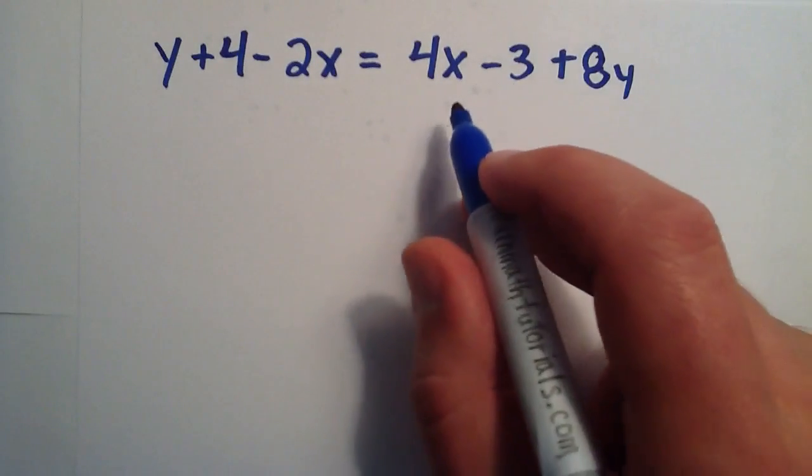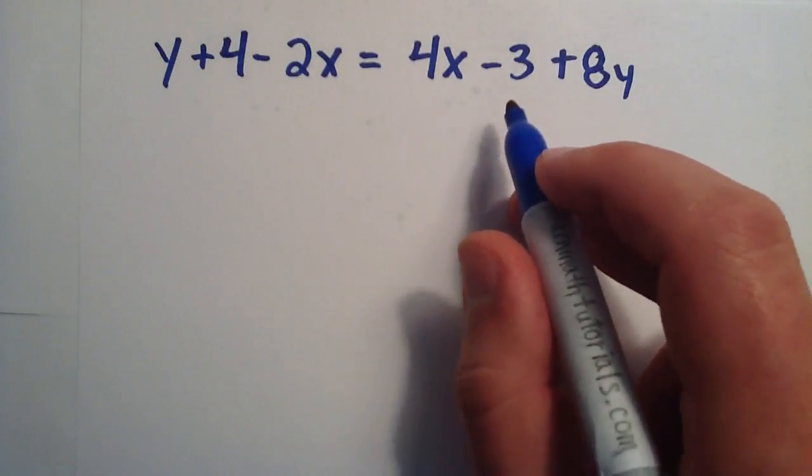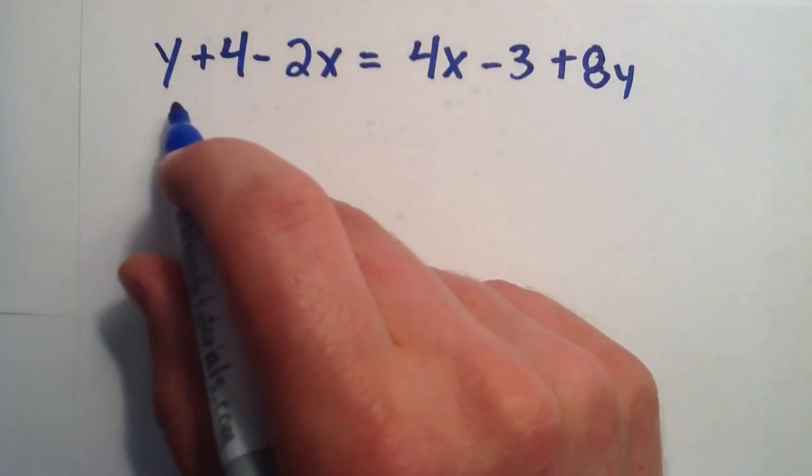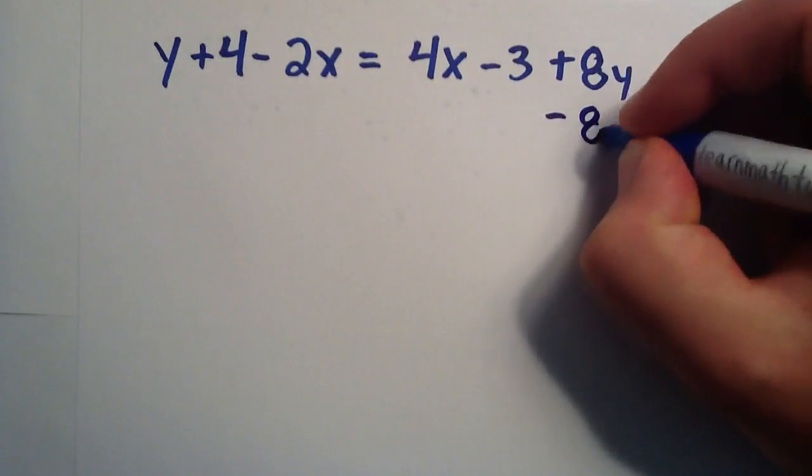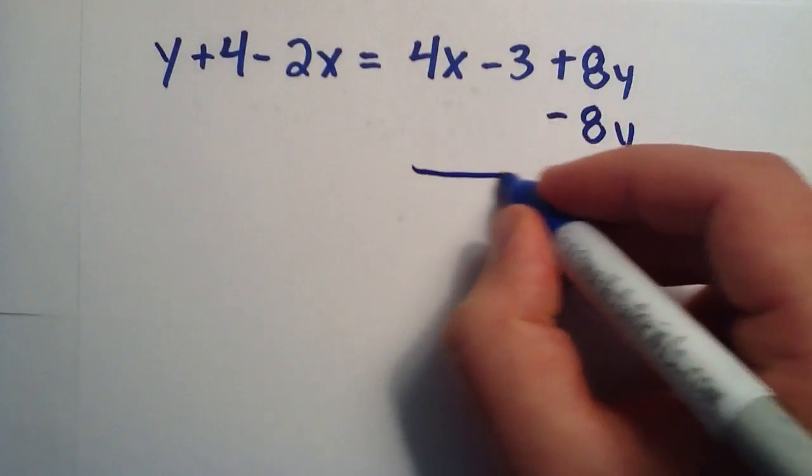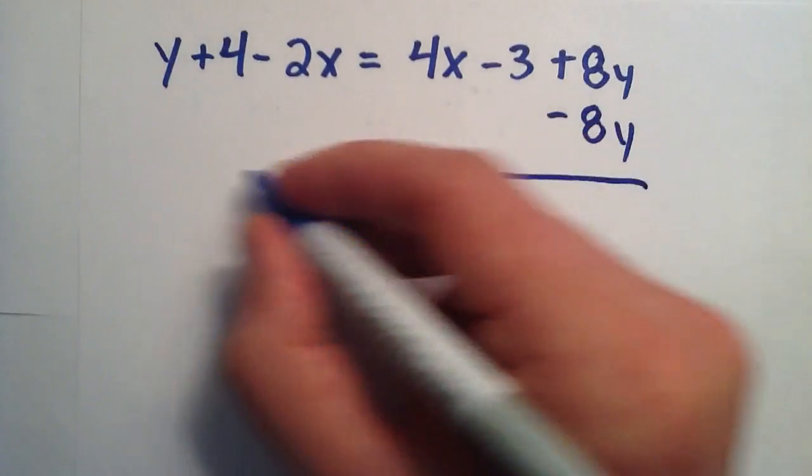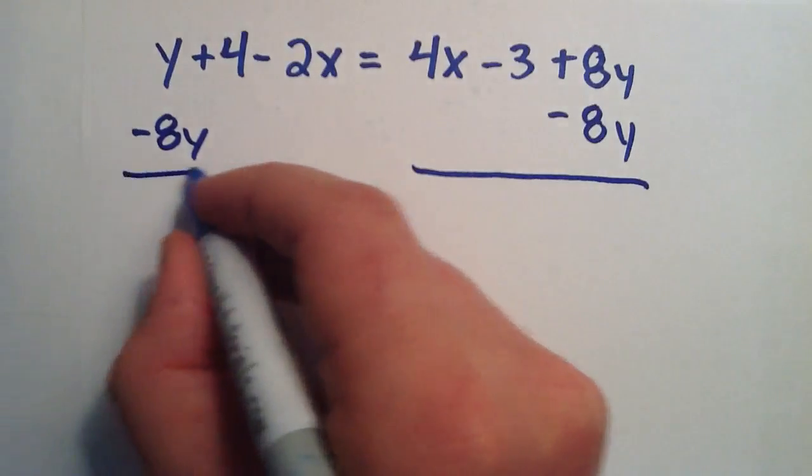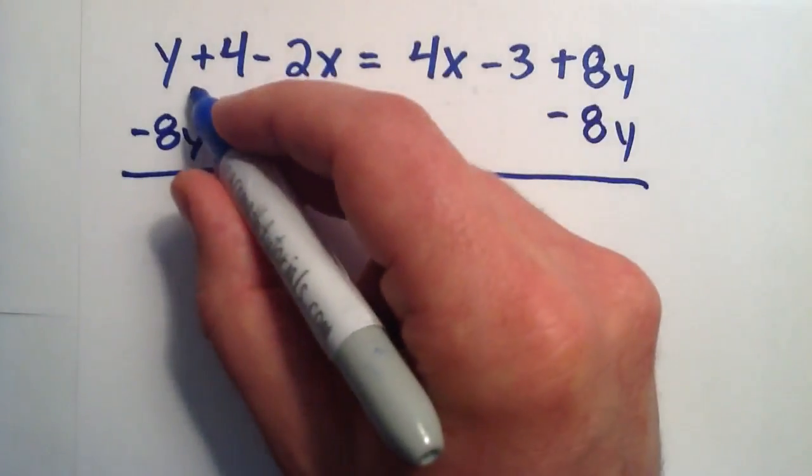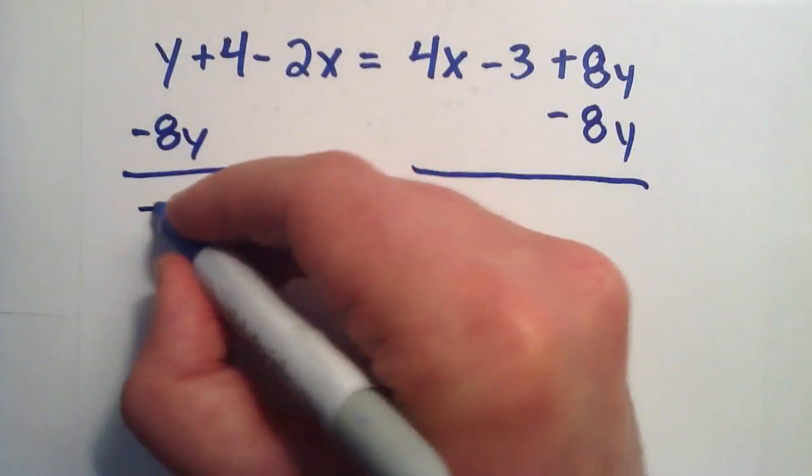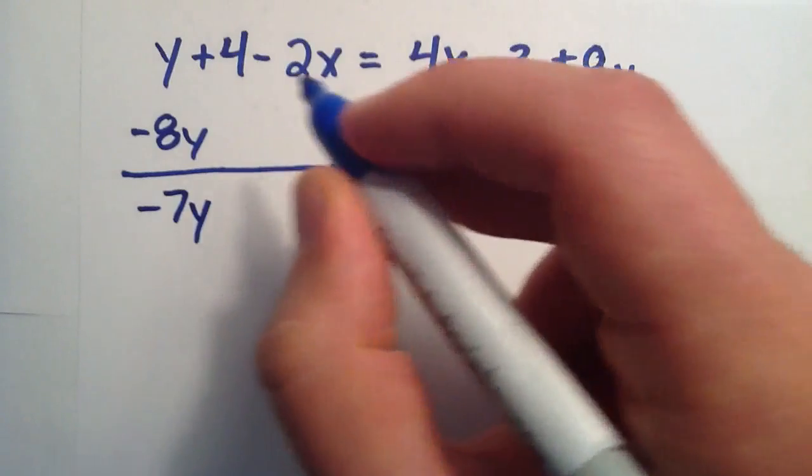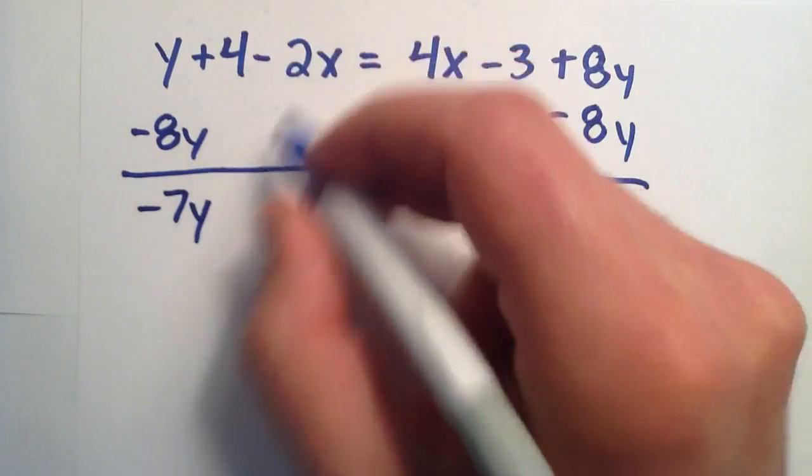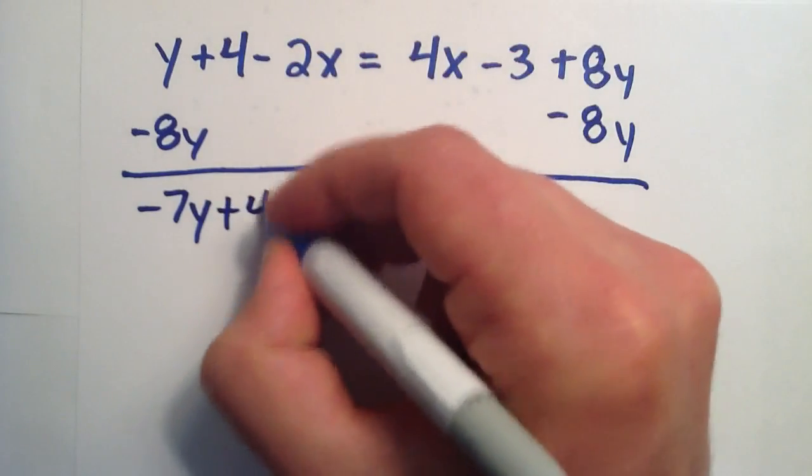So in order to do that, the first step we need to take is we need to move all of the y's to one side of the equation. So we're just going to get rid of all these y's on this side. And because we took them away on one side, we want our answers to be equivalent. So we have to take the same amount away on the other side. One y, take away eight y's, gives us negative seven y's. And we didn't change the numbers, we didn't change the x's, so those simply stay the same.